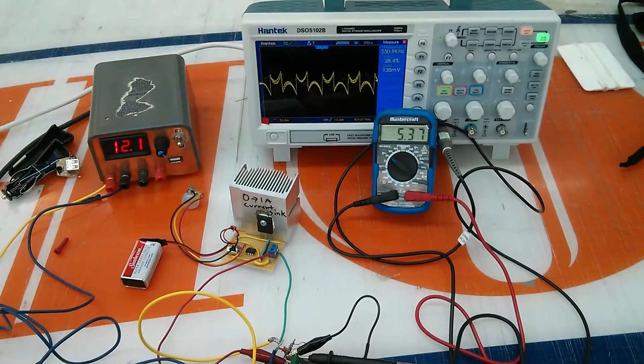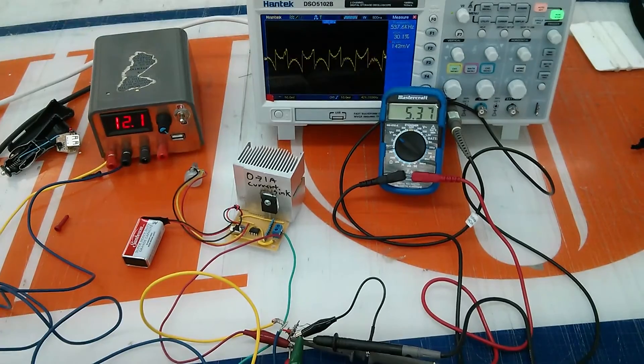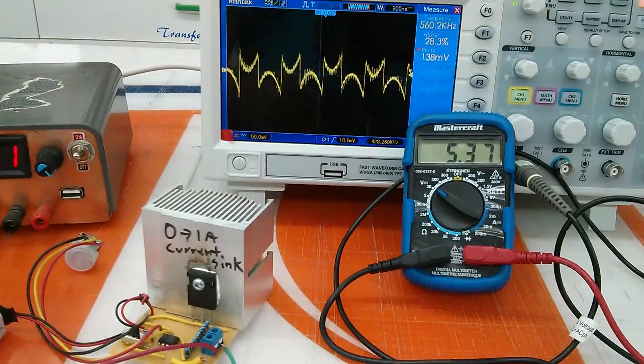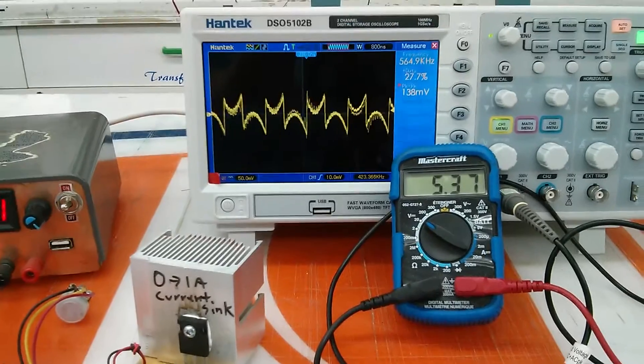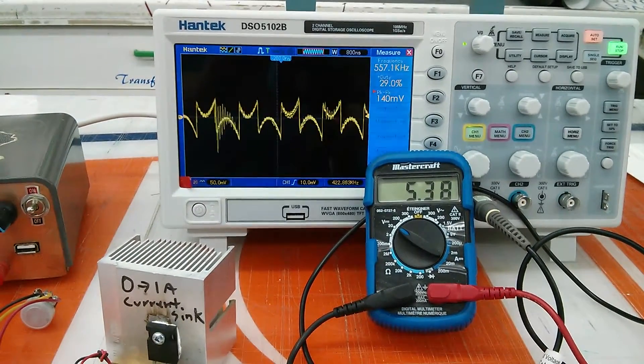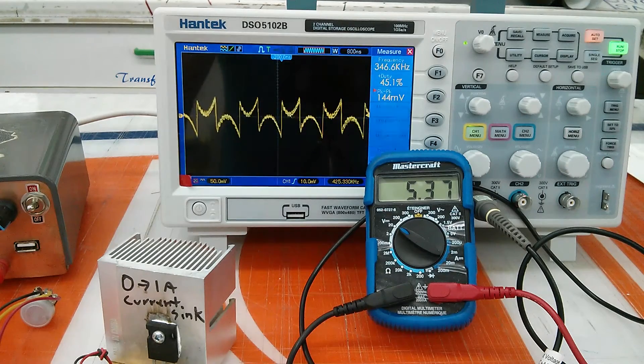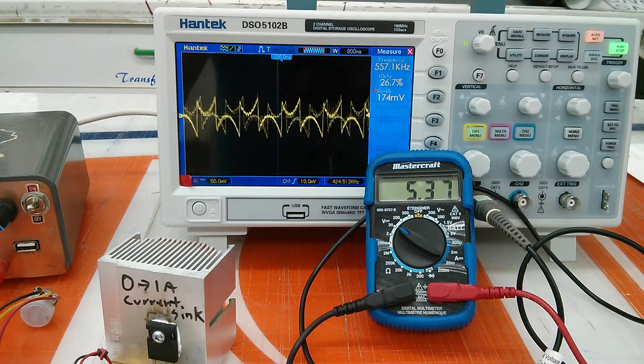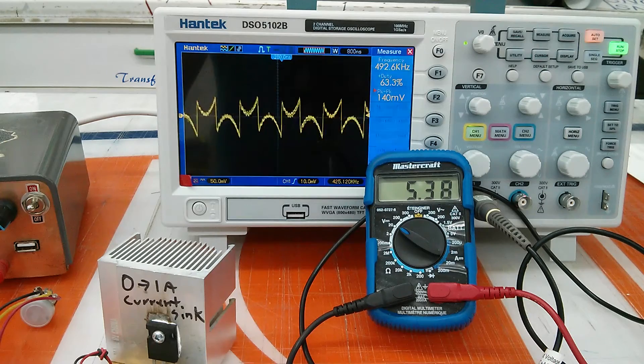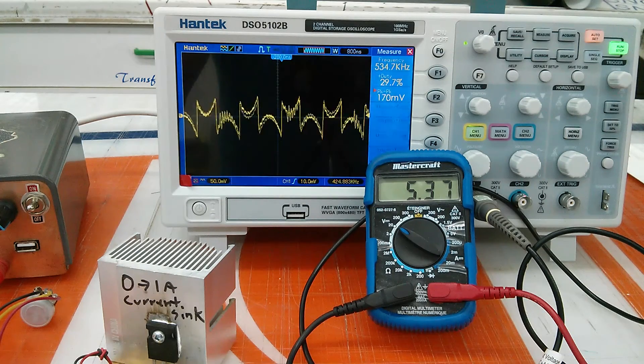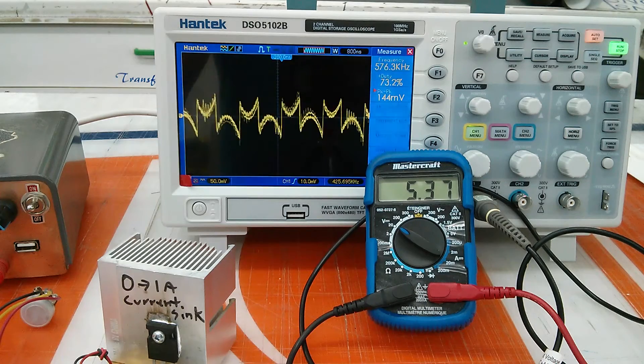So here's the whole test setup, a little hard to get it all in shot. I'll get focused in here. I have it hooked up to one of my small bench power supplies, putting out 12 volts. I have the output hooked up to a current sink, the multimeter and oscilloscope.